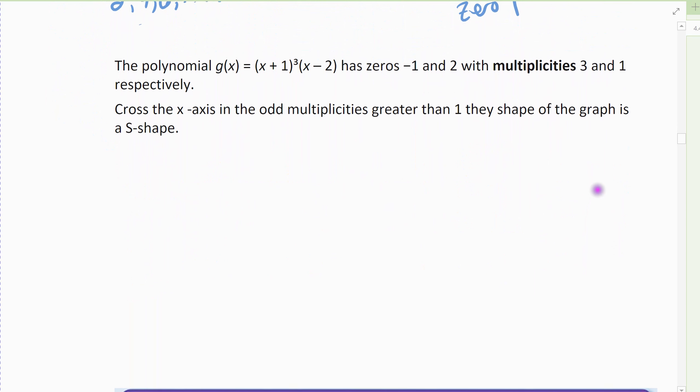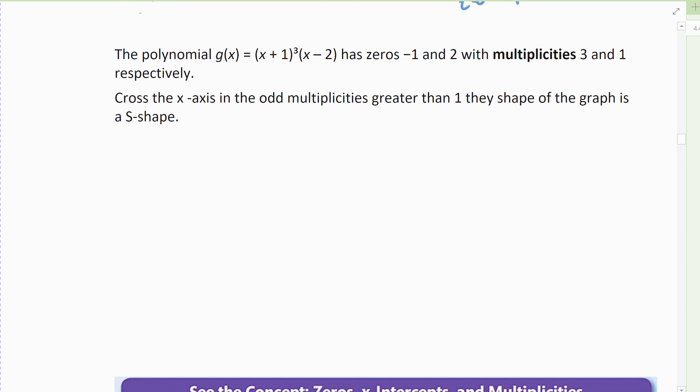If we have odd multiplicities, which a 1 would be an odd multiplicity. So this is an example of two different types of odd multiplicity. 1, it crosses nice and smoothly. So I've got my function here, (x + 1)³ and (x - 2). So I have a zero at negative 1 and I have a zero at positive 2. But they have different multiplicities. The negative 1 zero showed up three times. The positive 2 zero showed up one time.